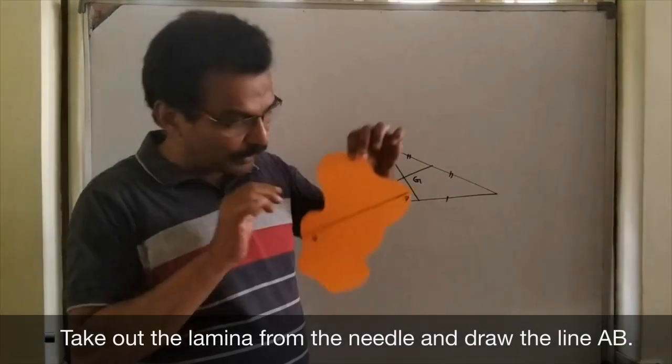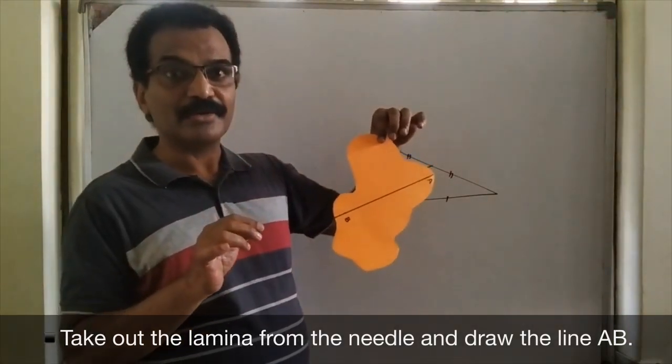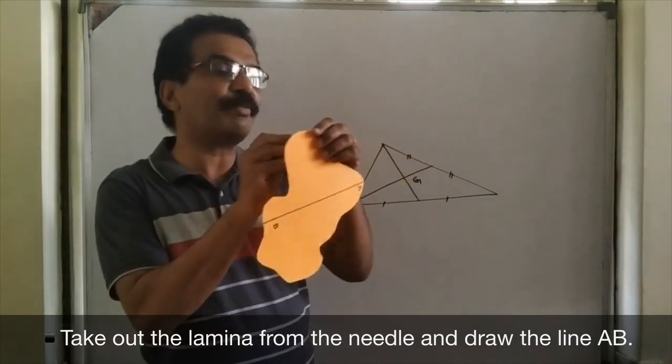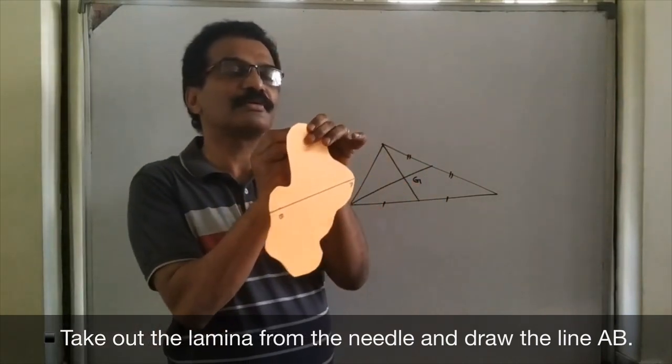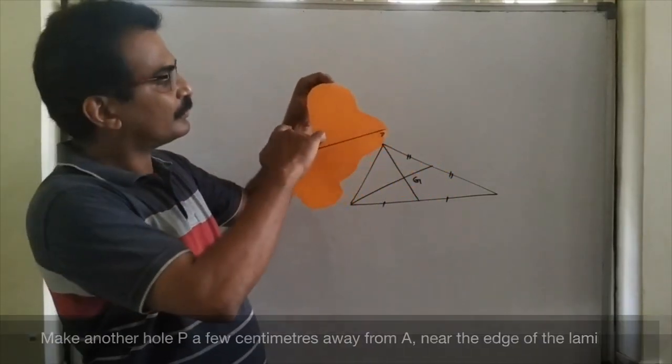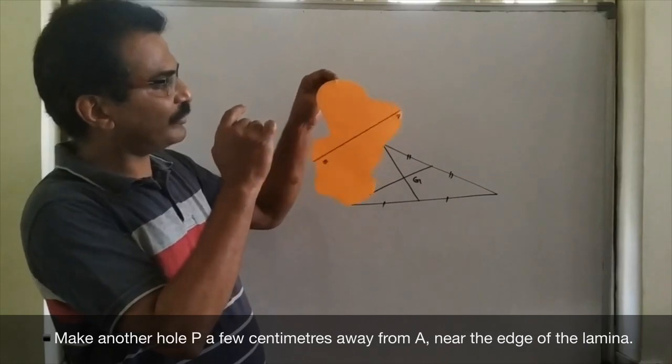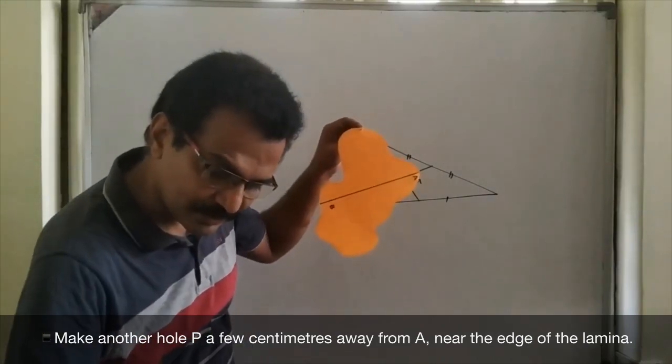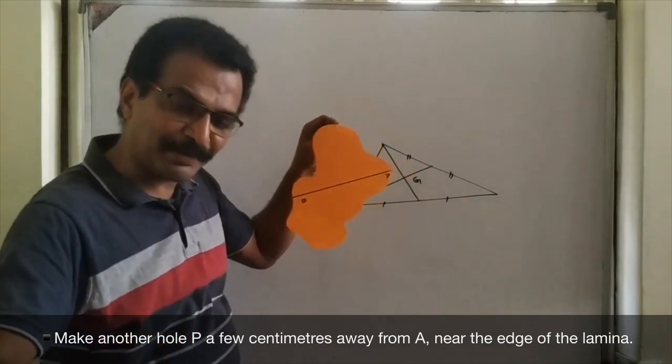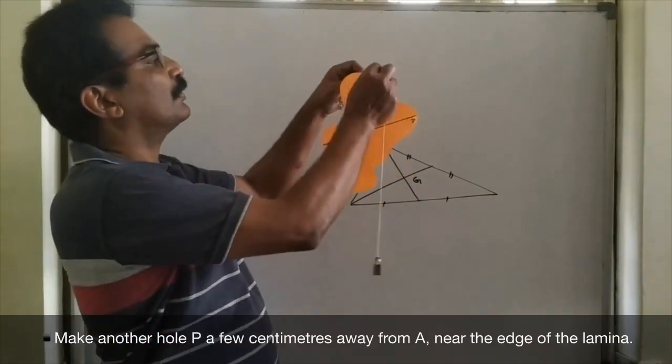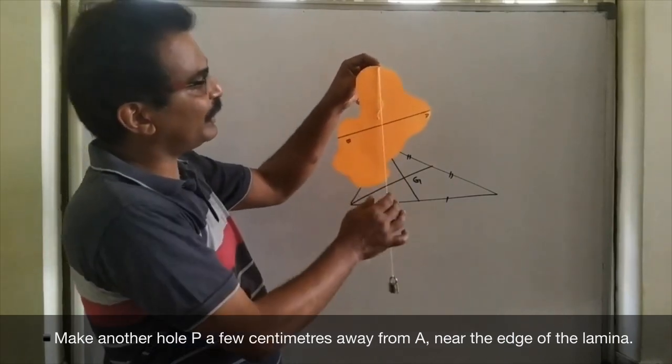Now, what do we have to do? I have to suspend this from another point. I am making another hole here. Yes. Again, plumb line. Suspending it from here.